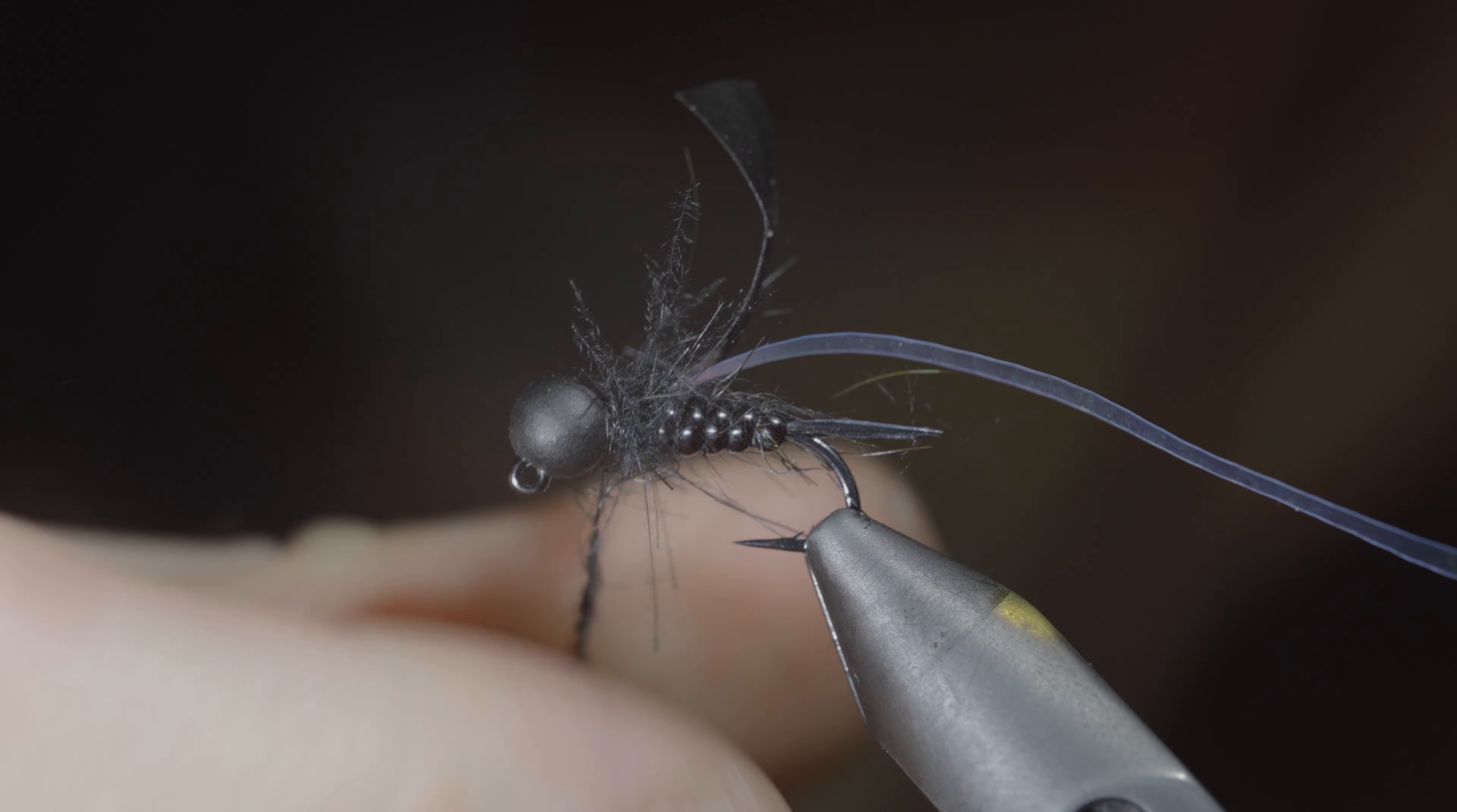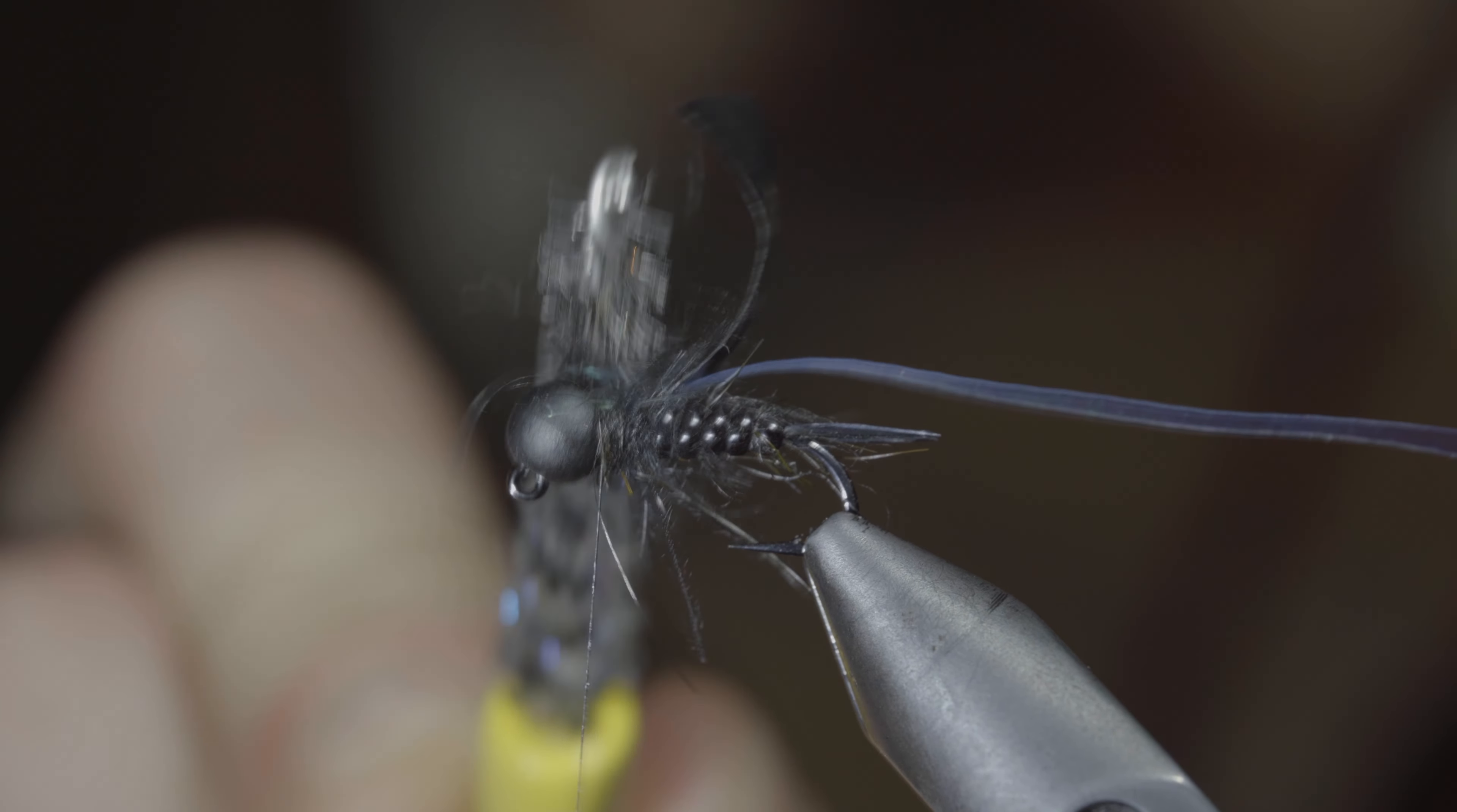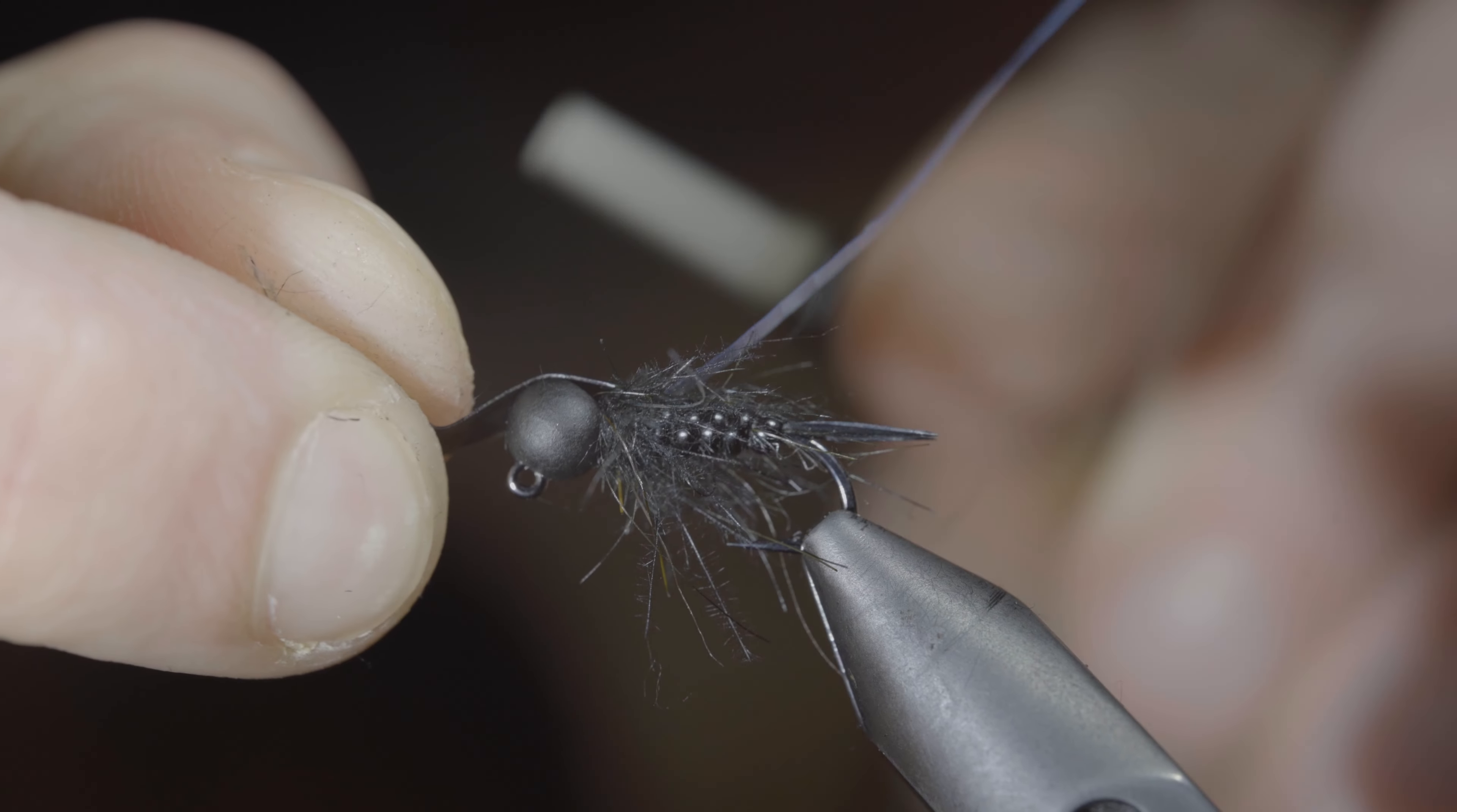At which point we'll secure and snip the excess free. Follow it up with a small dubbing noodle of black hare's ear to help push our CDC back and give it a brushed back look, before brushing everything out to give it a nice buggy look.